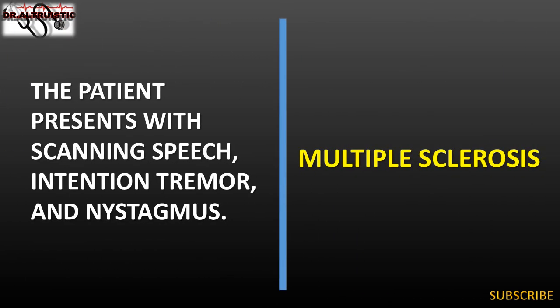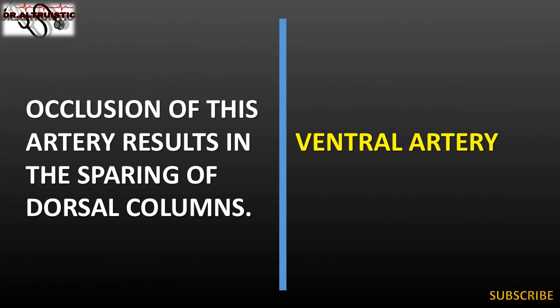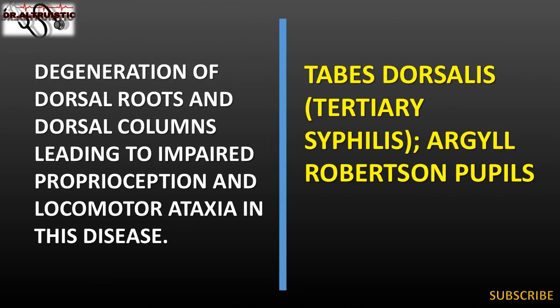The patient presents with scanning speech, intention tremor, and nystagmus: multiple sclerosis. Occlusion of this artery results in the sparing of dorsal columns: ventral artery. Degeneration of dorsal roots and dorsal columns leading to impaired proprioception and locomotor ataxia: tabes dorsalis, tertiary syphilis, Argyll-Robertson pupils.